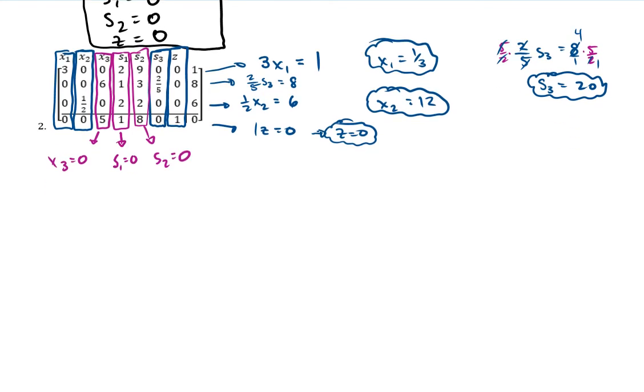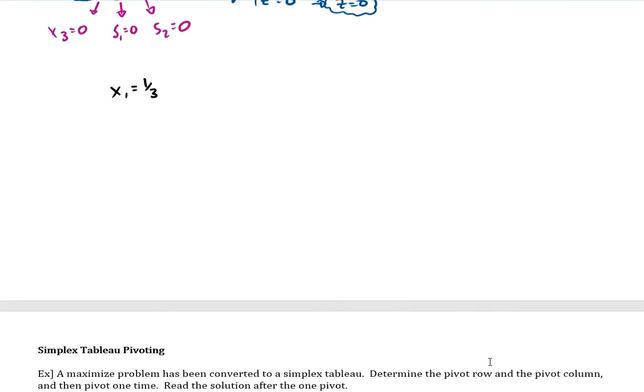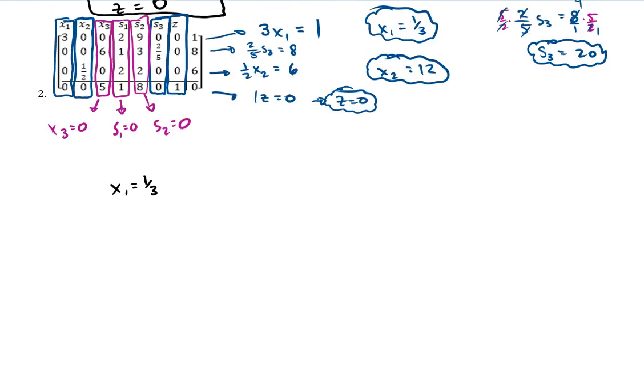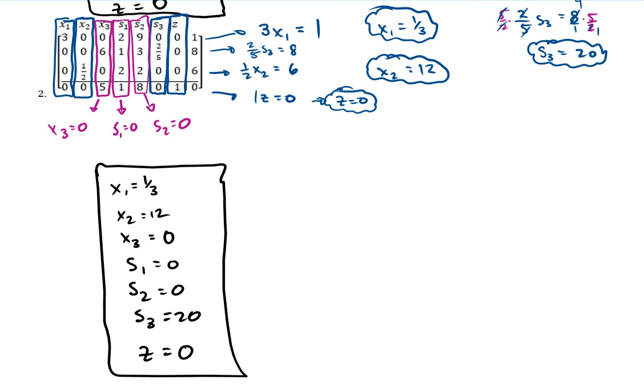And then now we just type it in or write it so that it's all organized. So x1 equals 1 third. We've got, well, let's just keep it. Yeah, let's go vertical. I think I can fit that. So x1 is 1 third. X2, so I'm just making sure I'm writing them in order. x2 is 12, then x3 would be next. x3 was 0, it's over there. And then s1 is 0, s2 is 0, s3 is all, where is it? There it is, 20. And then z is the last variable, z equals 0 also on this problem. There it is. So that's how we read the solution.